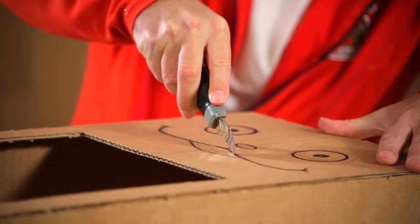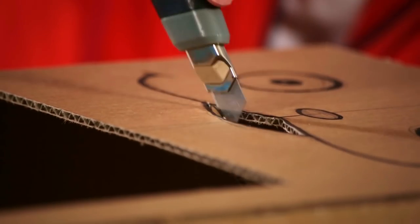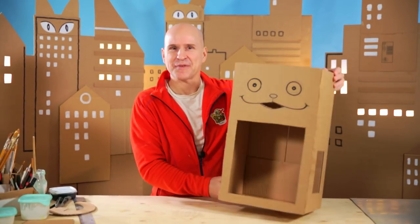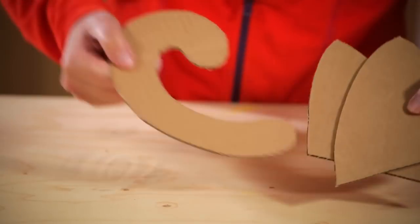And when the lines are dry, we cut out the mouth. Oh, now it starts to look like a cat cafe, doesn't it? But we still need two key features of the cat to make that perfect cat look: ears and tail.